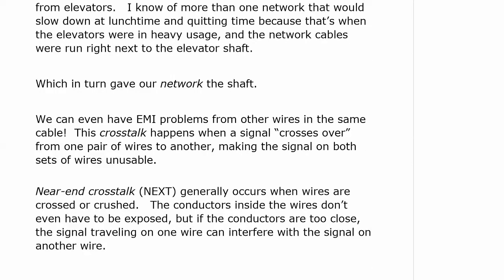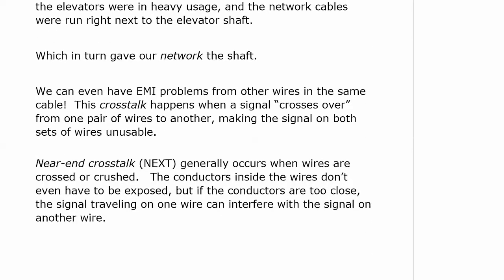We can have EMI problems from other wires in the same cable — this is called crosstalk. It happens when a signal crosses over from one pair of wires to the other, making signals on both sets of wires unusable. Near-end crosstalk generally occurs when wires are crossed or crushed. The conductors inside don't even have to be exposed — if the conductors are too close, the signal traveling on one wire can interfere with the signal on another. That's why when I taught a class for high school students about making cables, I had to tell them: don't walk on the cable.